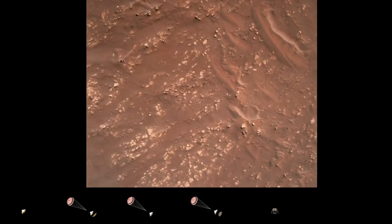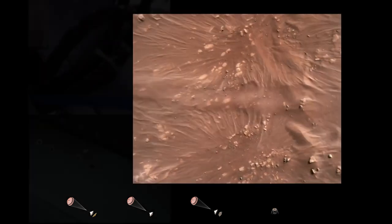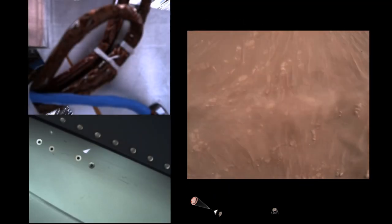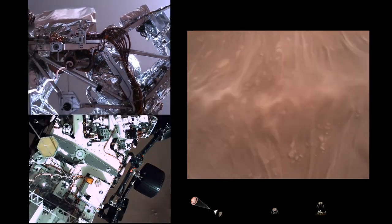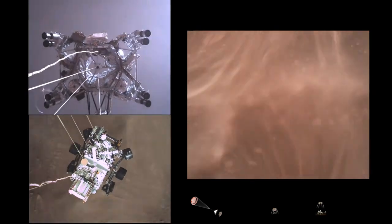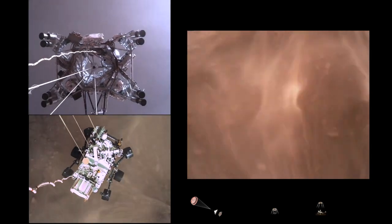We have started our constant velocity segment, which means we are conducting the sky crane, about to conduct the sky crane maneuver. Sky crane maneuver has started. About 20 meters off the surface.